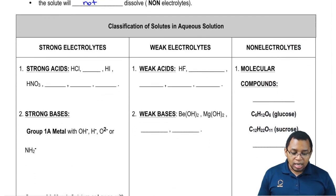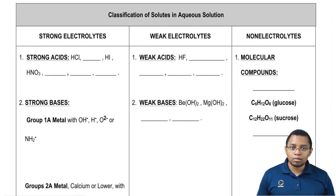If we take a look here, we can actually classify different types of compounds as either being strong electrolytes, weak electrolytes, or non-electrolytes. Let's look at the strong electrolytes. Our strong electrolytes belong into three categories.